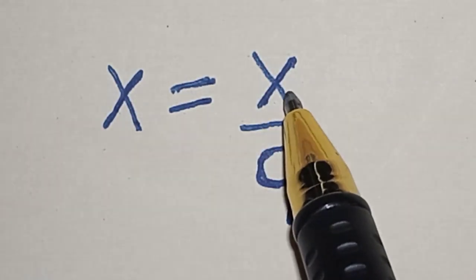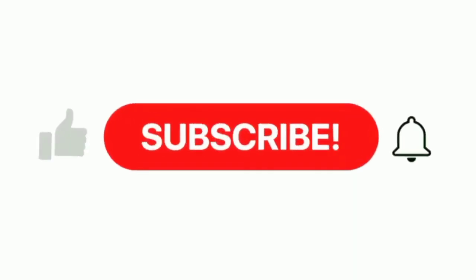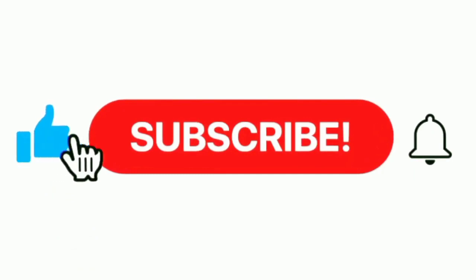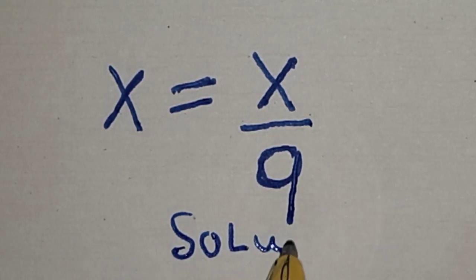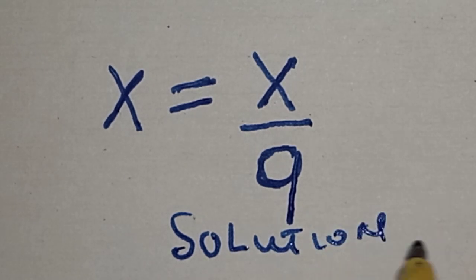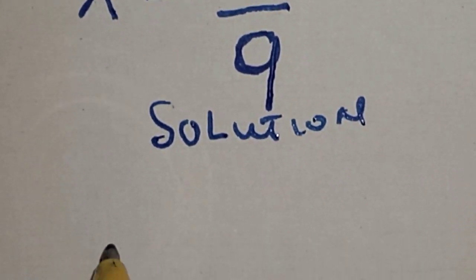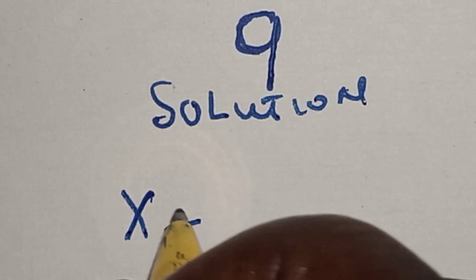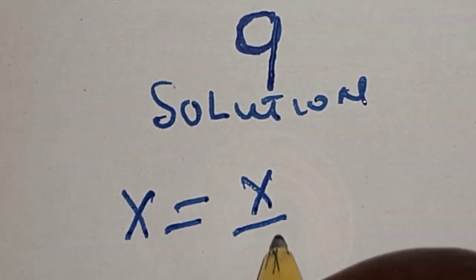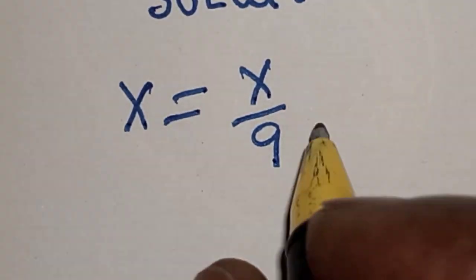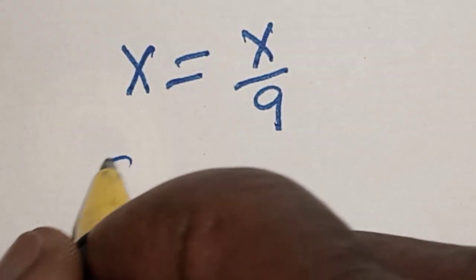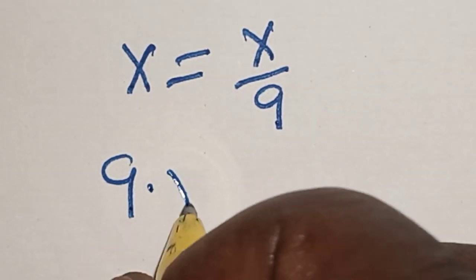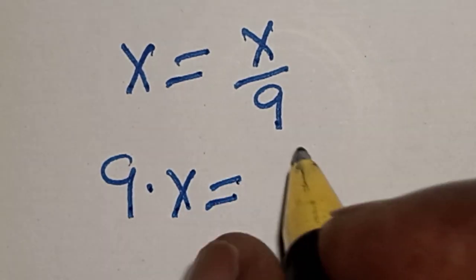x equals x divided by 9. Like, share, comment, and subscribe. Thank you. Solution: we have x equals x divided by 9. Then let's multiply both sides by 9. 9 multiplied by x is equal to x over 9 multiplied by 9.